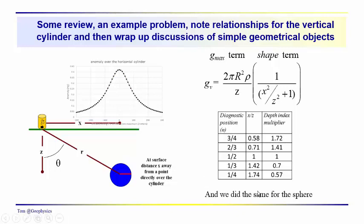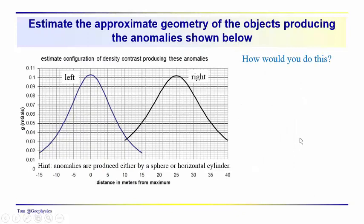So we also did this for the sphere, and so we talked a good bit about simple geometrical objects. We did talk about the vertical cylinder and also the infinite plate as geometries that we could use in order to approximate the influence of geological features of interest.